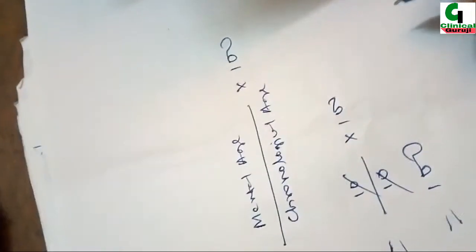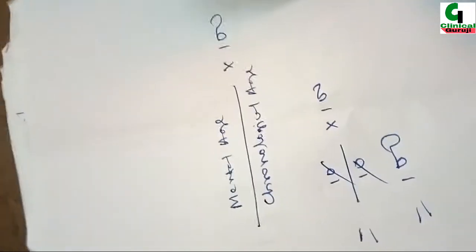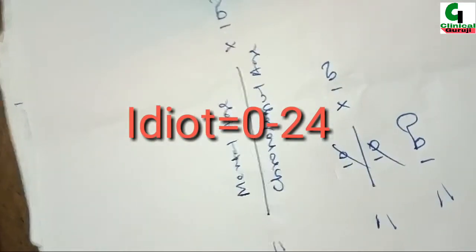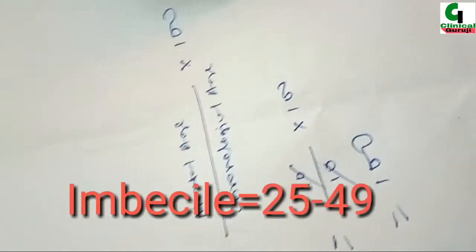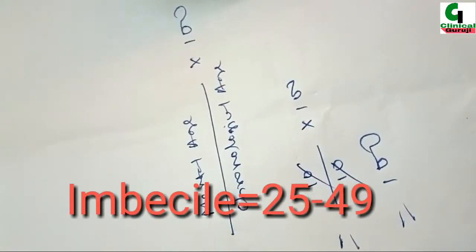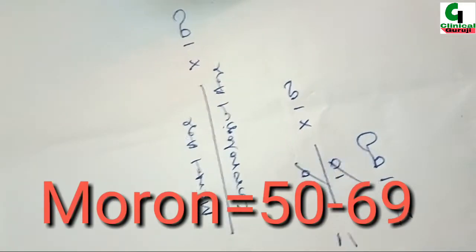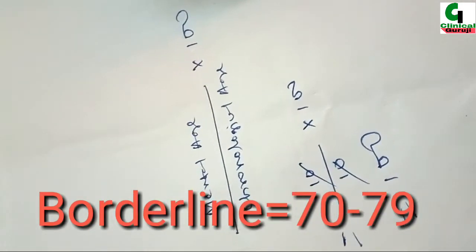So now I will tell you levels of intelligence and IQ range. For idiot, IQ ranges 0 to 24. For imbecile, IQ ranges 25 to 49. For moron, IQ ranges 50 to 69. For borderline, IQ ranges 70 to 79.